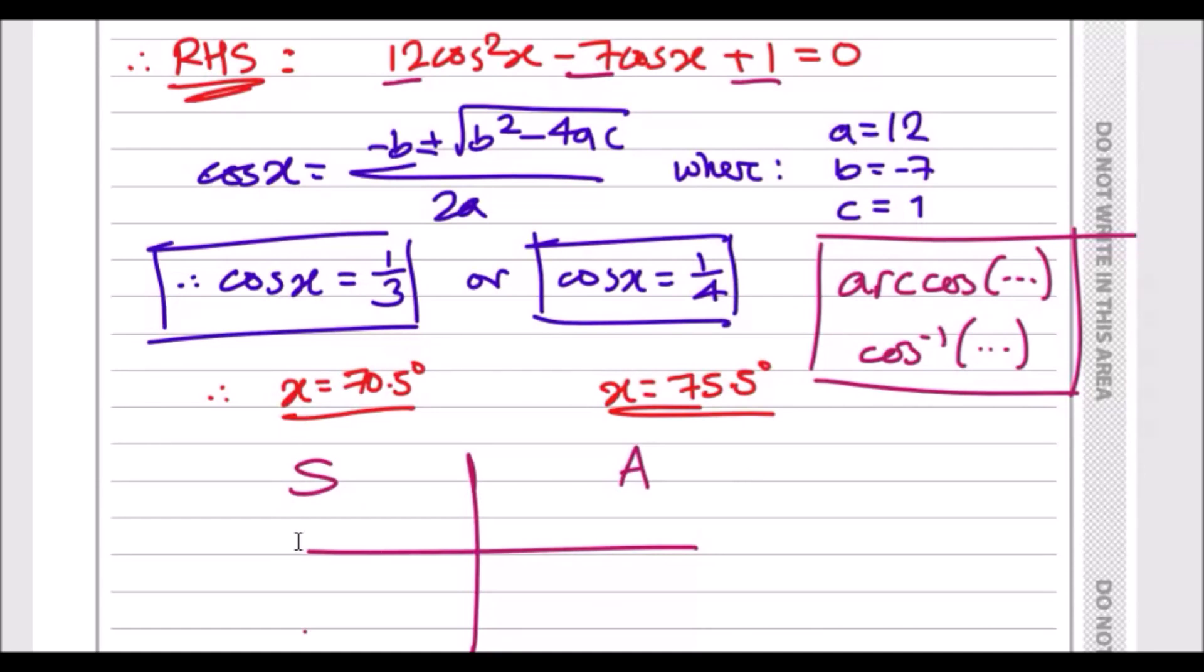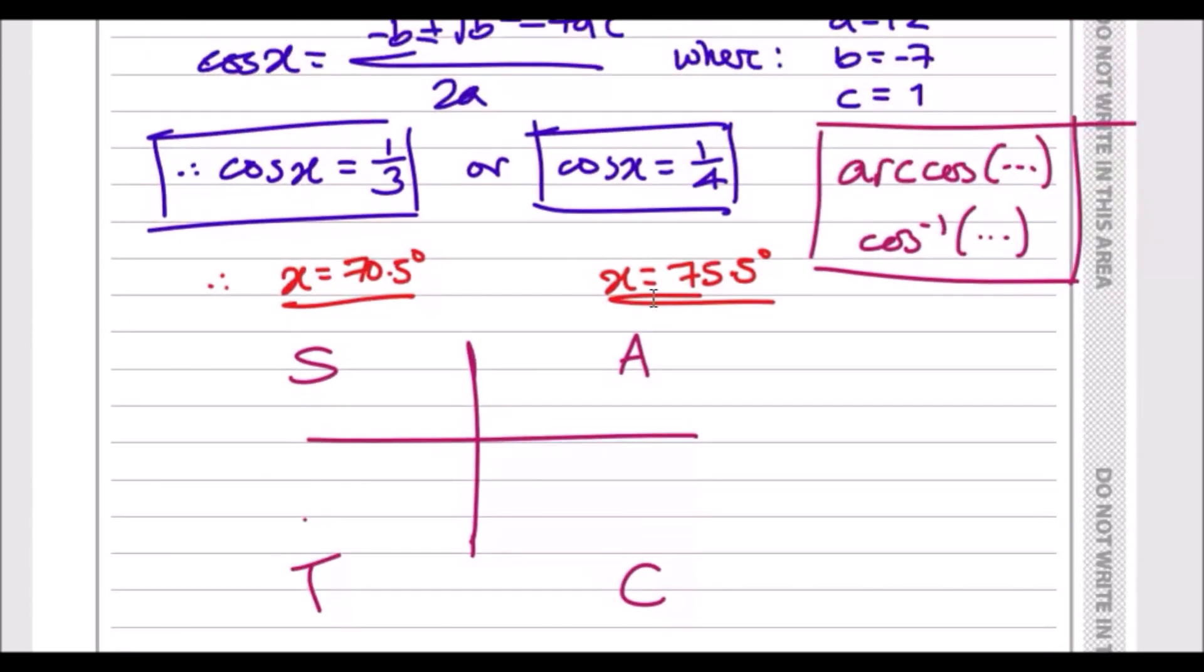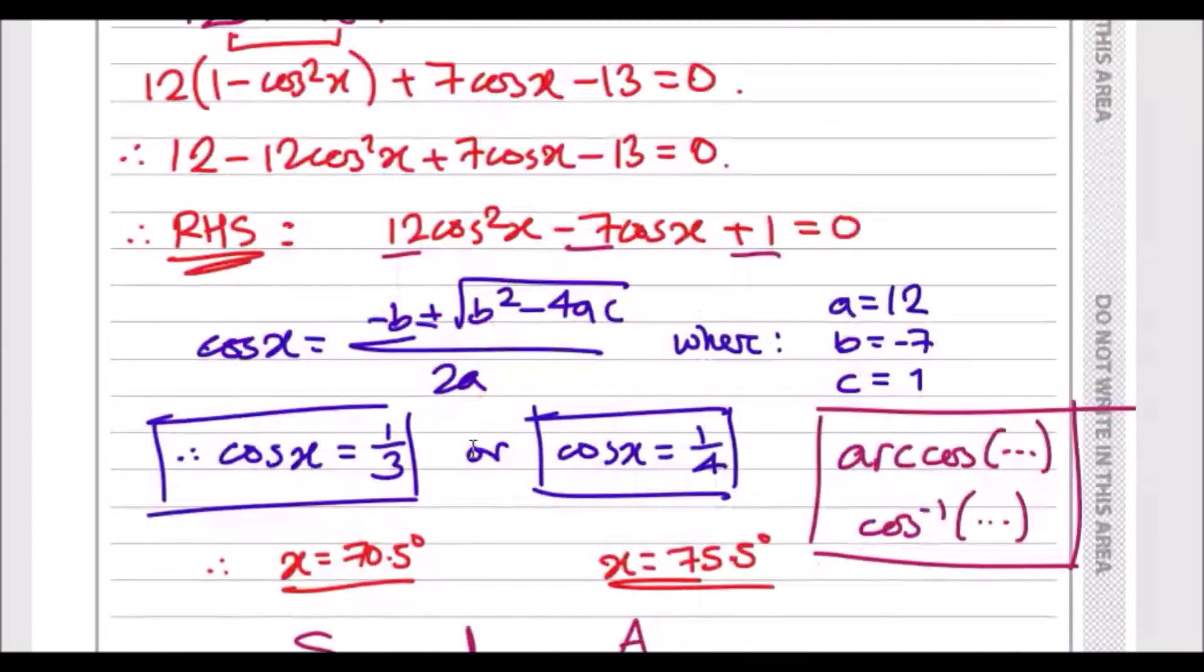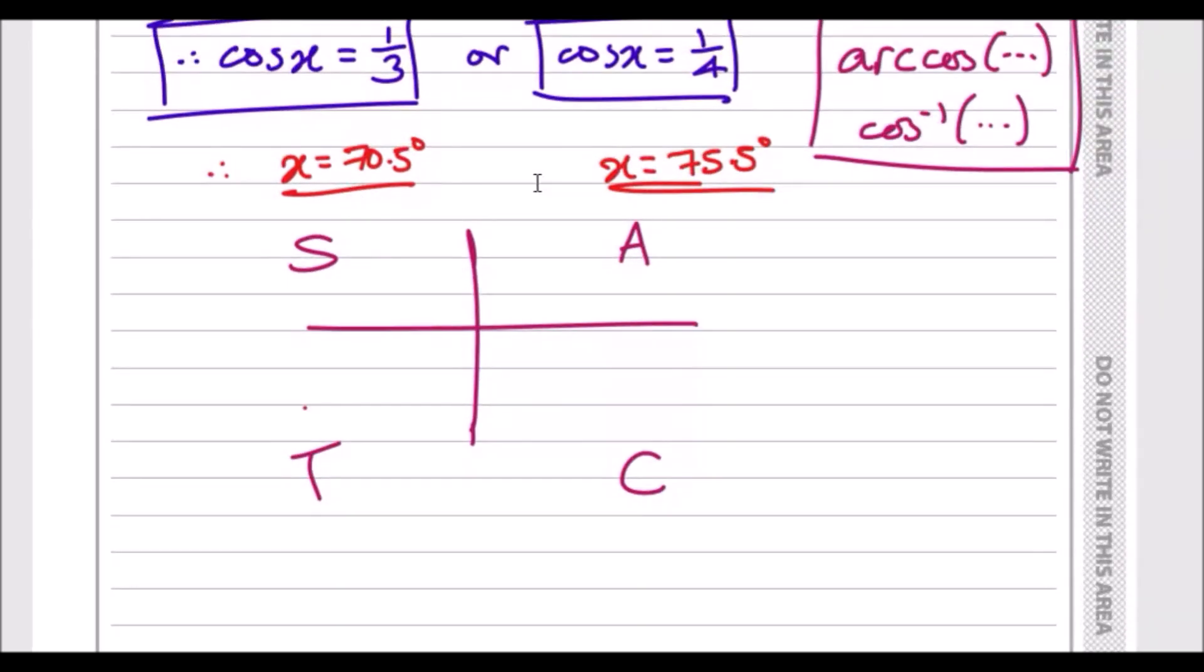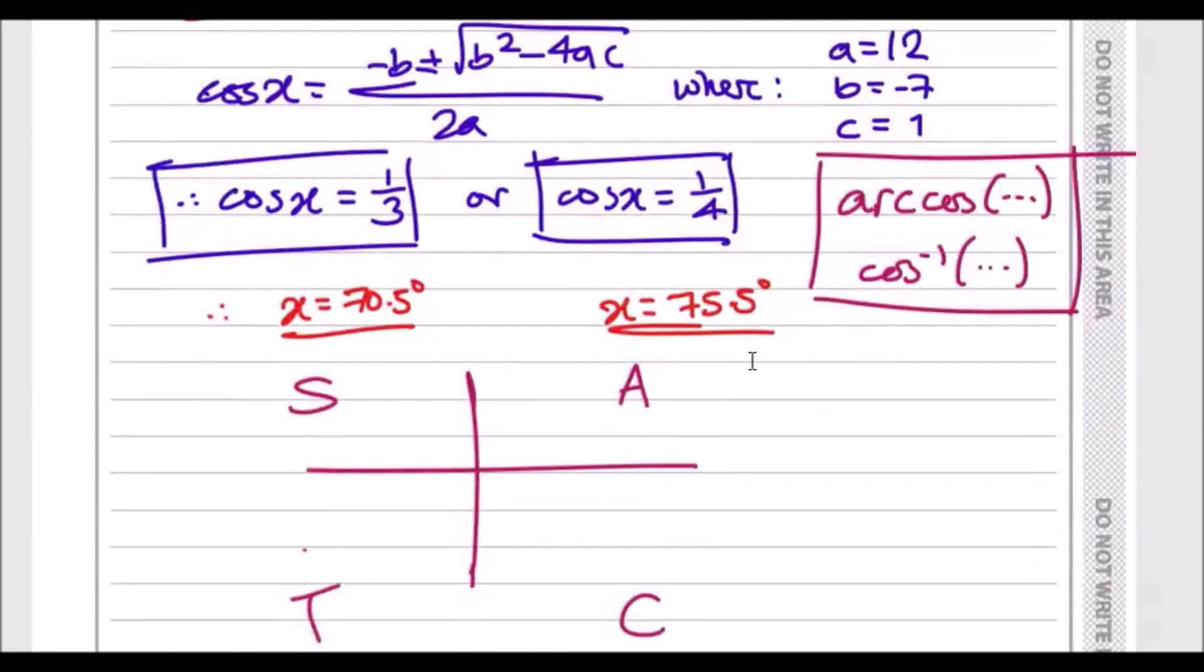Now I didn't actually solve this fully, so this is what we're gonna do together. Now that you've got the solutions for cos, we need to use something known as the CAST diagram to plot this in and find the correct angle for this range.